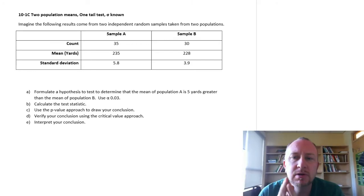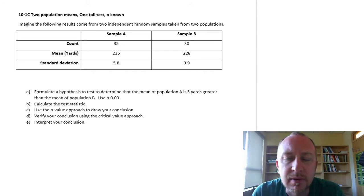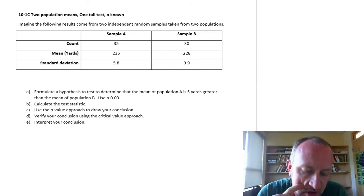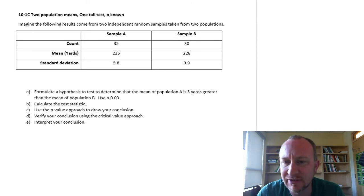Hello and welcome to our third problem now in module 10, where we're doing hypothesis testing on two population means. I just wanted to do one example where we are performing a test on a difference in means where the magnitude of the difference is something other than zero.